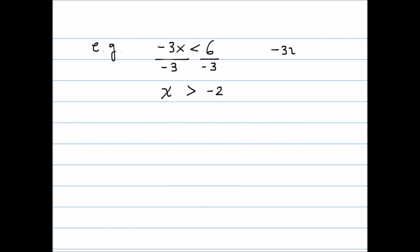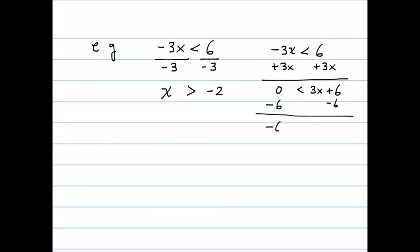Instead, if we start with negative 3x is less than 6, I can add 3x to both sides. The left-hand side becomes 0 and the right-hand side becomes 3x plus 6. Then to get rid of the 6 on the right-hand side, I subtract 6. The left-hand side is negative 6 and the right-hand side is just 3x. This way, I've gotten rid of the negative sign in front of the 3. Now dividing by the positive number 3 on both sides, I do not have to change the direction of the inequality. I get negative 2 less than x, which is the same as x greater than negative 2. Either way you get the same result.